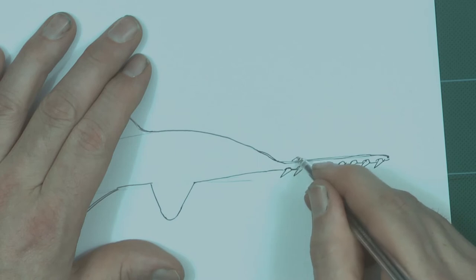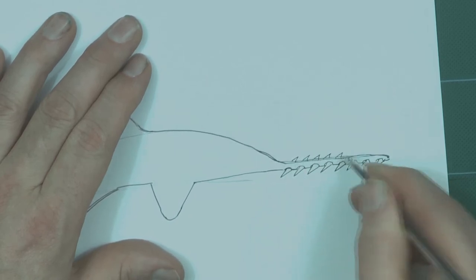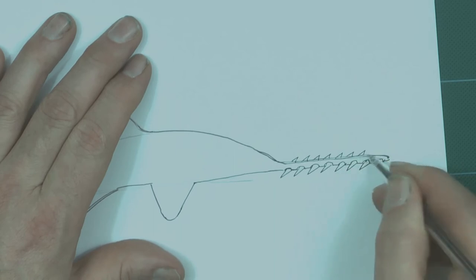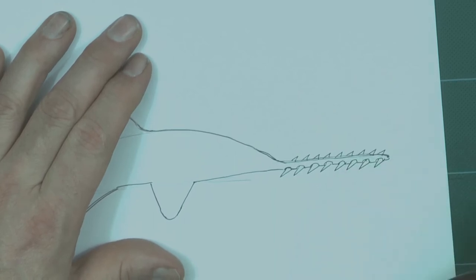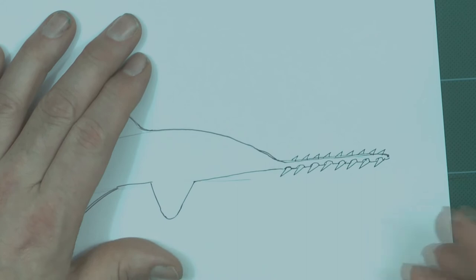Now on the other side. Same thing. Now these are not teeth. They are actually modified scales. That the sawfish thrashes around like that to get its food.